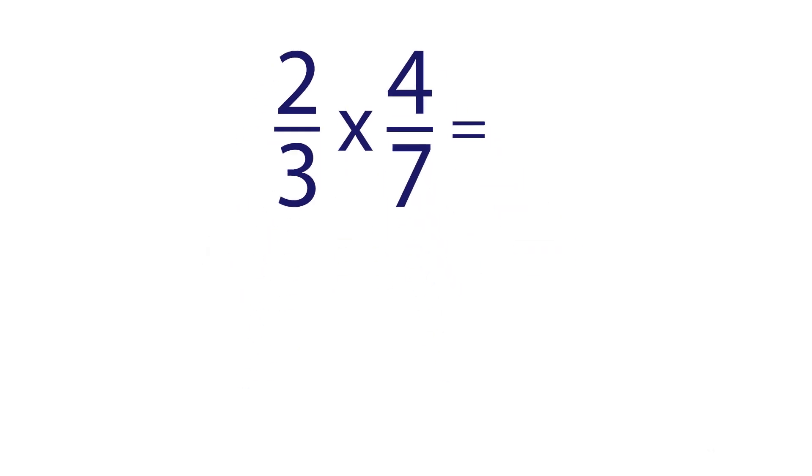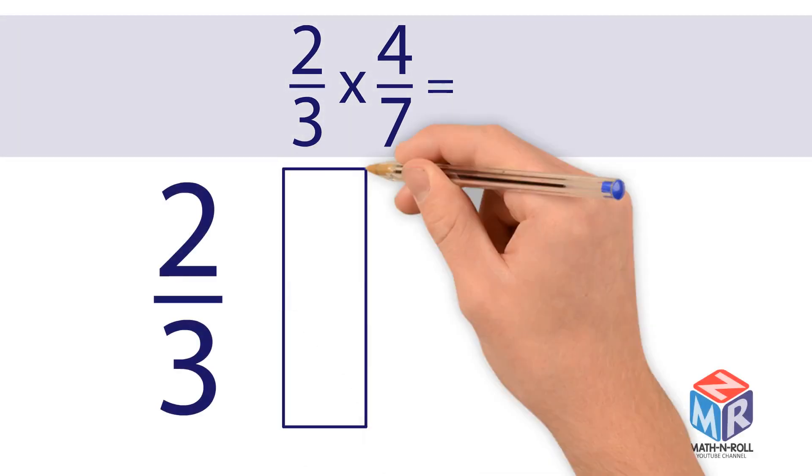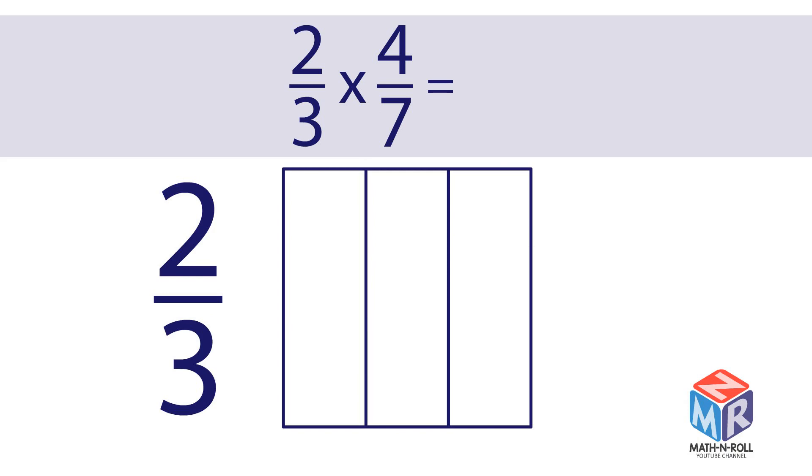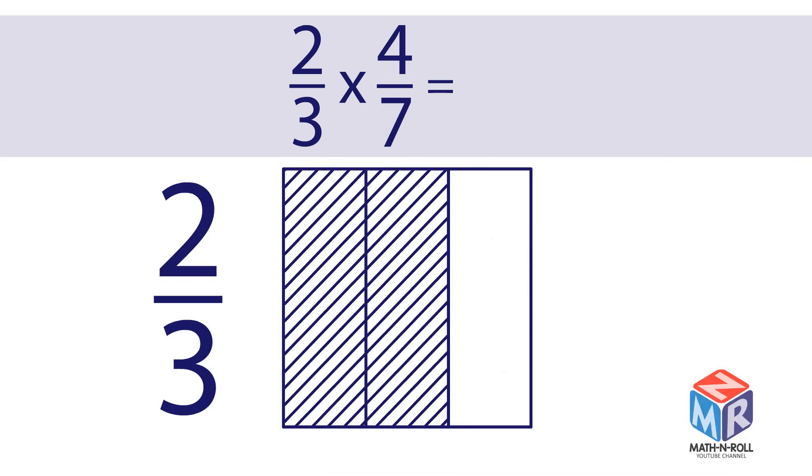Let's try another example. 2 3rds times 4 over 7. 2 3rds. The first model has three columns. 2 out of three columns are shaded. The shaded columns represent the fraction 2 3rds.